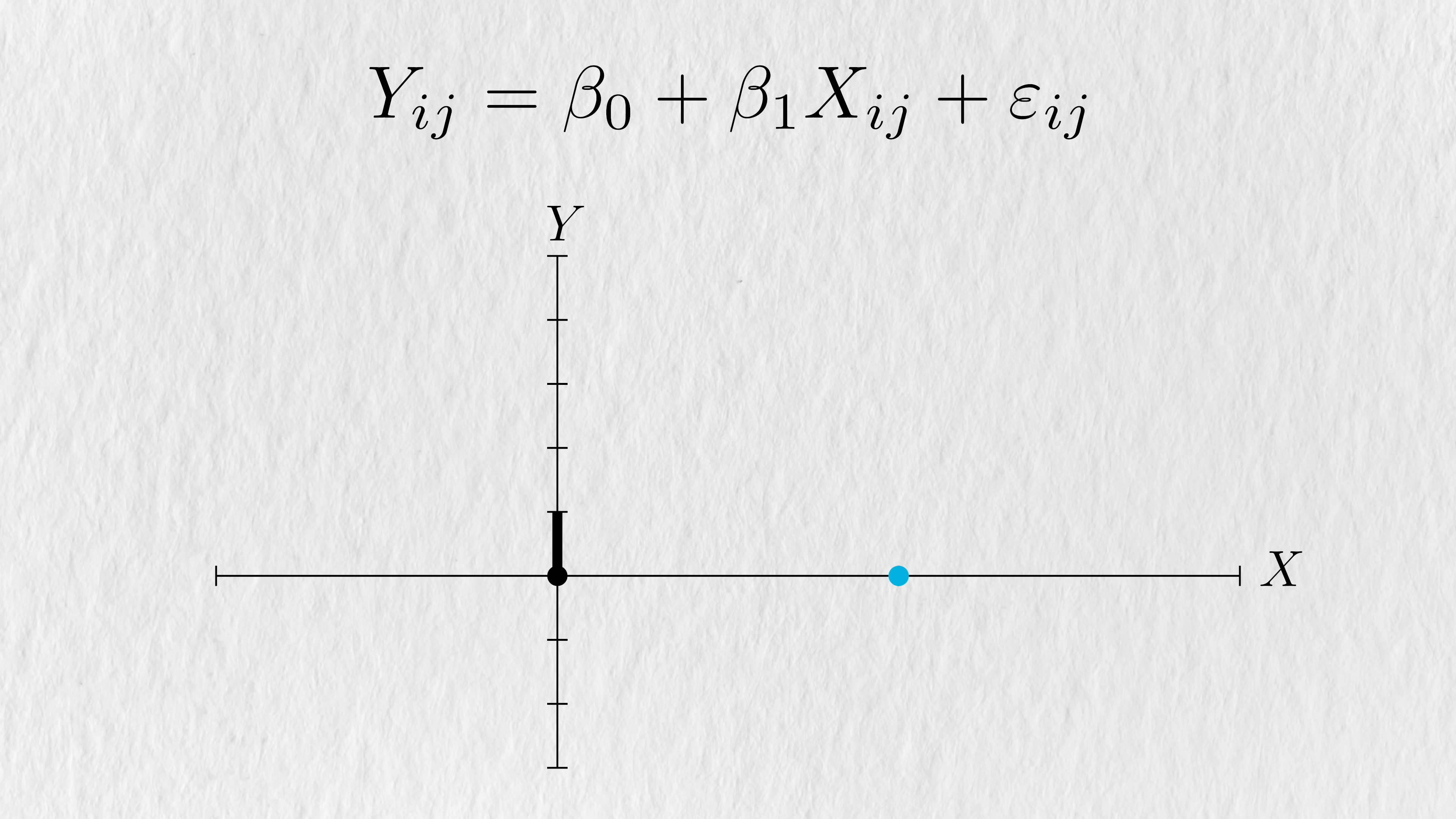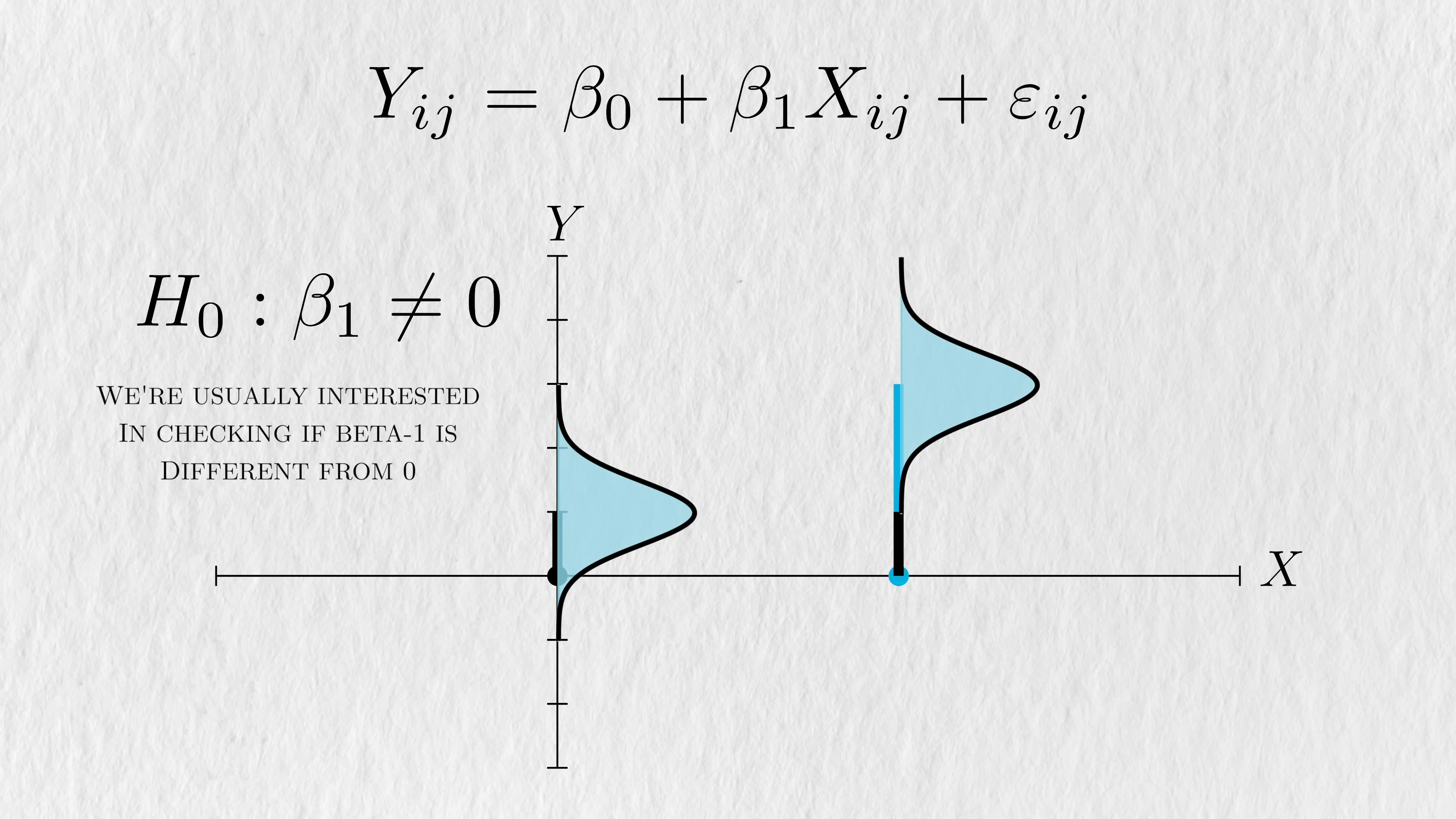When we consider the treatment group, we're considering the case that x equals 1. If y doesn't have a relationship with x, then the two conditional distributions should look the same. But if it does have a relationship, then we'll see this as a shift in the distribution. More specifically, the mean of the treatment group will be shifted by beta1, and we're usually interested in checking if it's distinguishably different from 0.